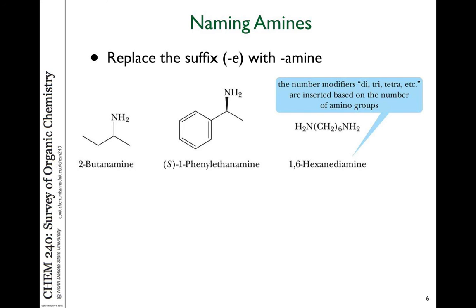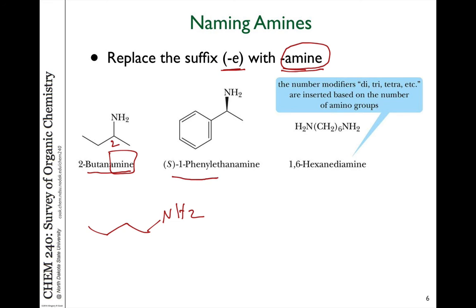Let's talk more about naming amine compounds. We use the word amine as a suffix on the parent name, replacing the terminal E with A-M-I-N-E. For example, butane becomes butanamine. Here's an example of phenylethanamine — the parent compound ethanamine has a two-carbon chain, with a phenyl group on carbon one. The number one designation goes to where the nitrogen is attached.